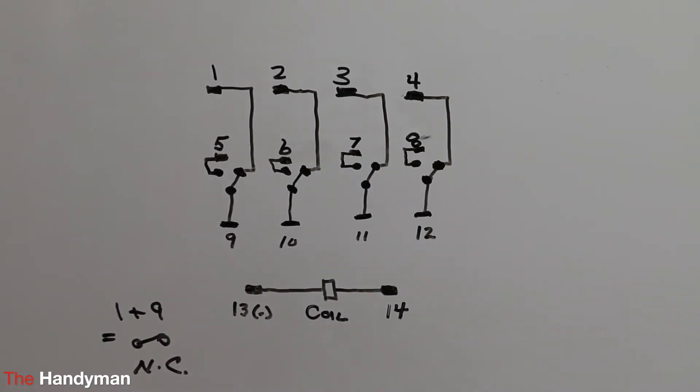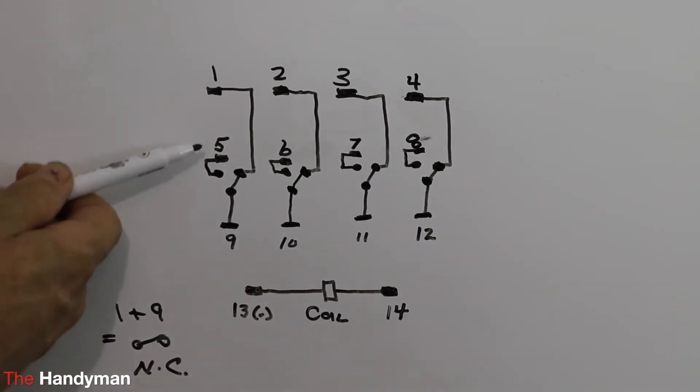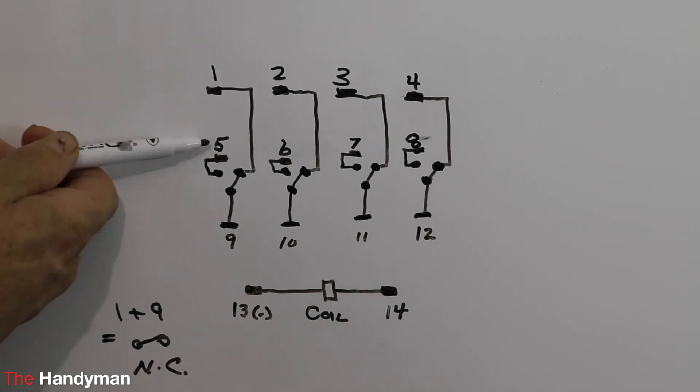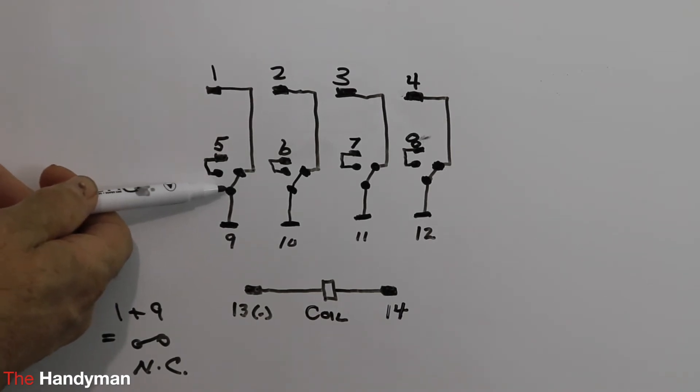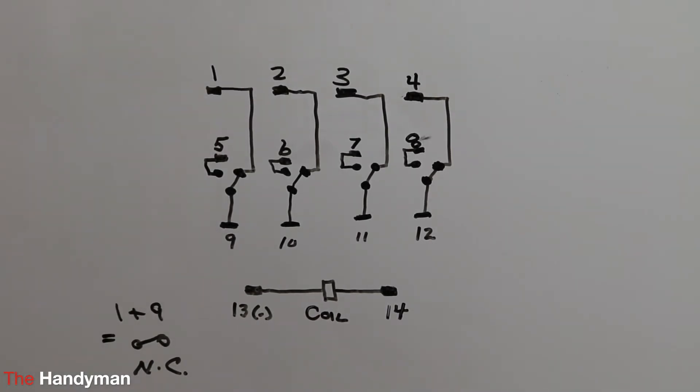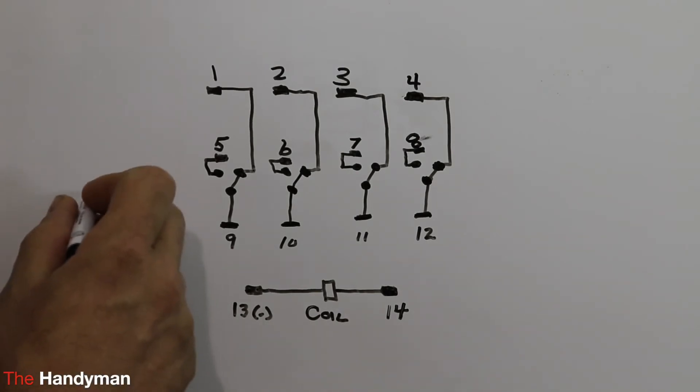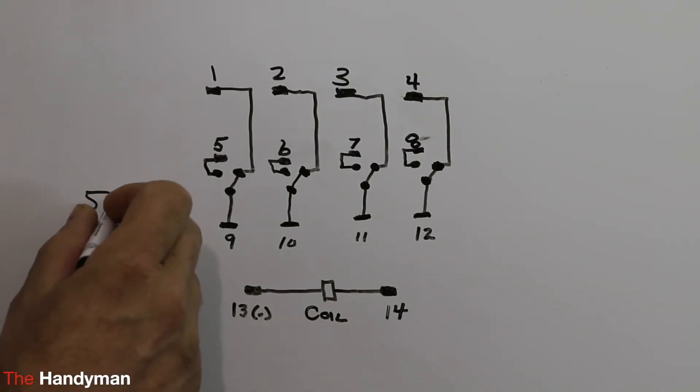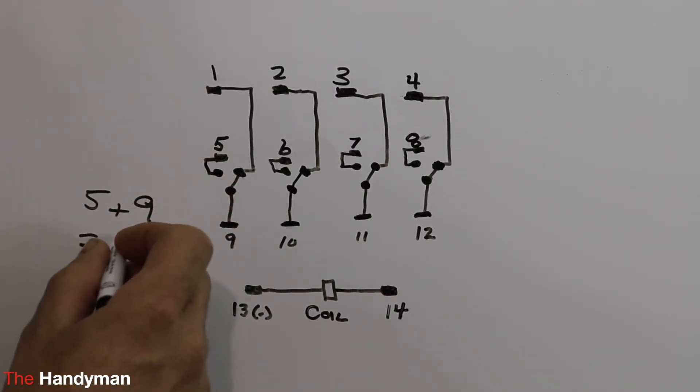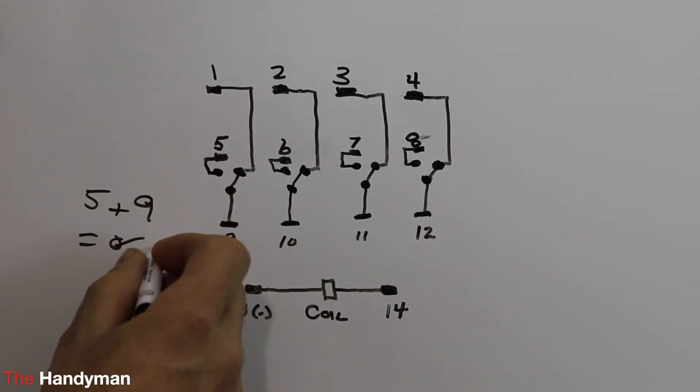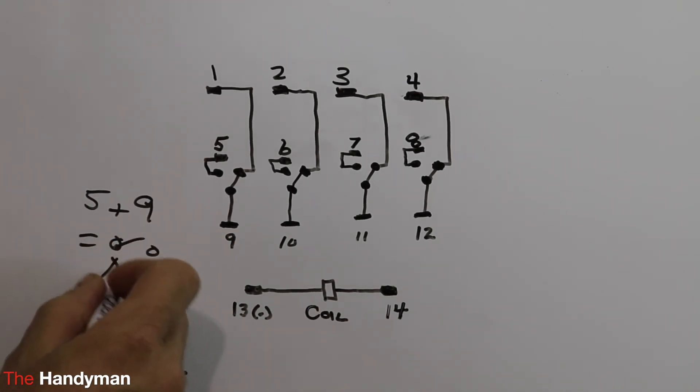Then, if you look at the first position again, screw terminal five comes down to this side, and there's no contact between it and nine. So what that means is screw terminal number five and screw terminal number nine is normally open.